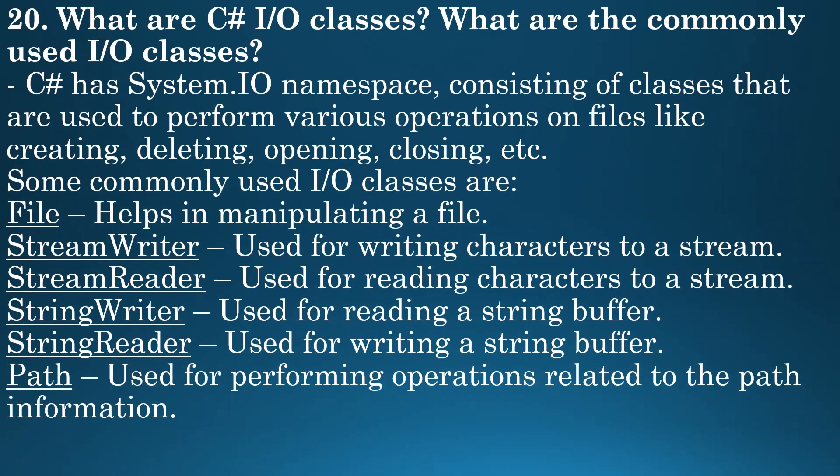Next question: what are C-Sharp input output classes? C-Sharp has the System.IO namespace consisting of classes used to perform various operations on files like creating, deleting, opening, closing, etc. Some commonly used input output classes are: File, which helps in manipulating a file; StreamWriter, used for writing characters to a stream; StreamReader, used for reading characters from a stream; StringWriter, used for reading a string buffer; StringReader, used for writing a string buffer; and Path, used for performing operations related to path information.